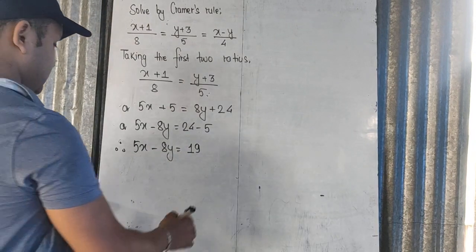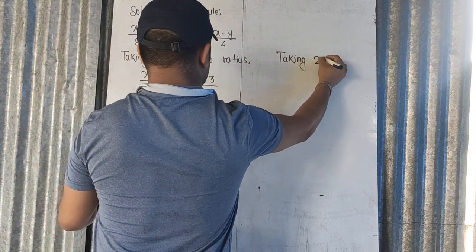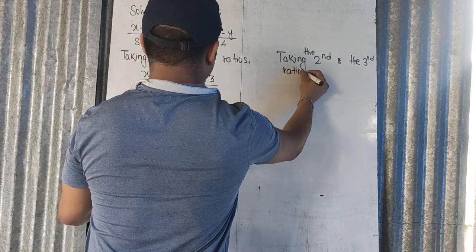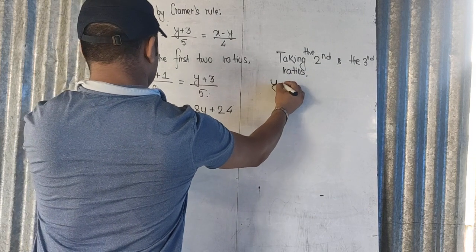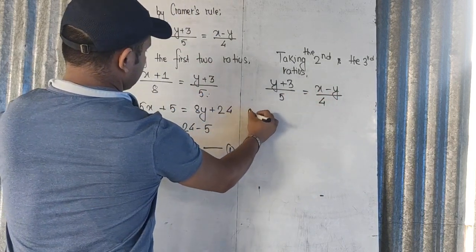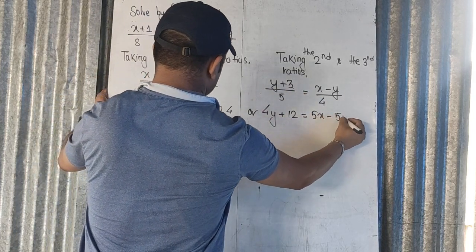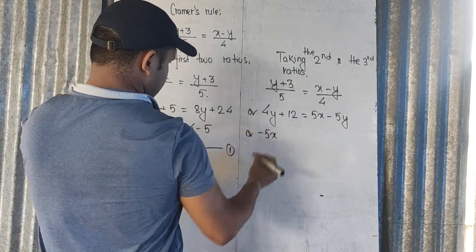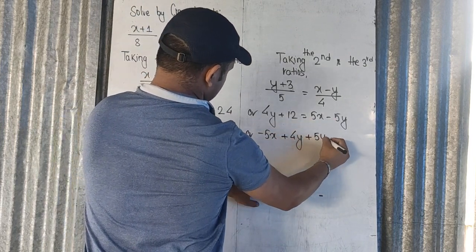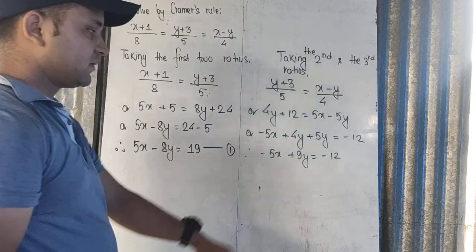Now we take the second and third ratios. From y plus 3 by 5 equals x minus y by 4, we get 4y plus 12 equals 5x minus 5y. Rearranging gives minus 2x plus 9y equals minus 2. This becomes equation two. So we now have two simultaneous equations to solve by Cramer's Rule.